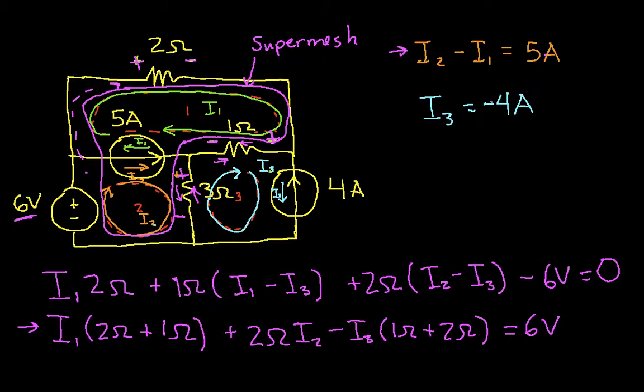Because I3 is the only virtual current, mesh current, going through the 4 amp source. And they're going in opposite directions, so I know that I3 has to be negative 4 amps. So that then completes step 2.